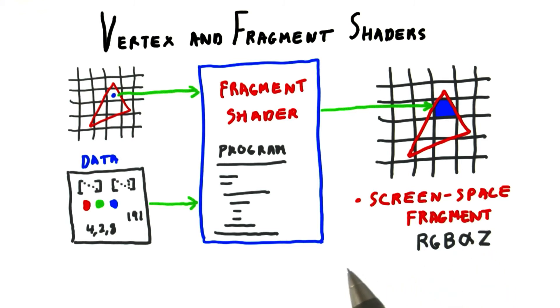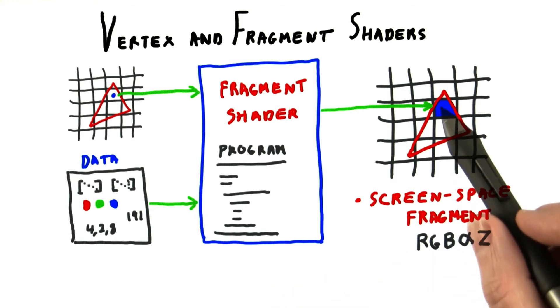By the way, the reason we call it a fragment is that it represents the piece of the triangle covered by the pixel.